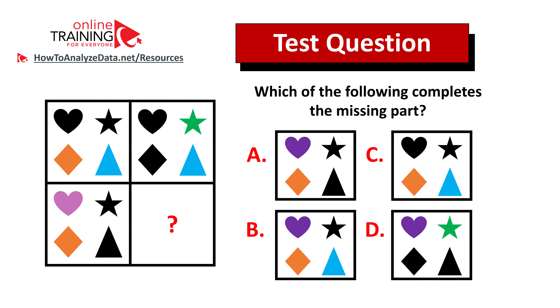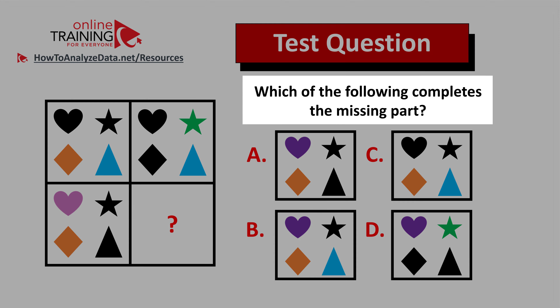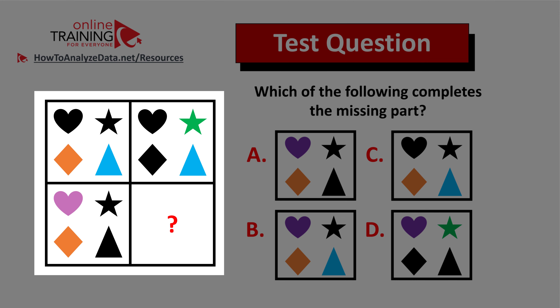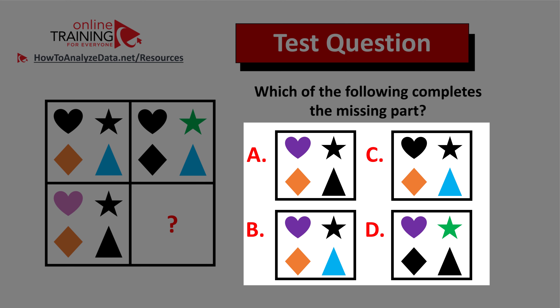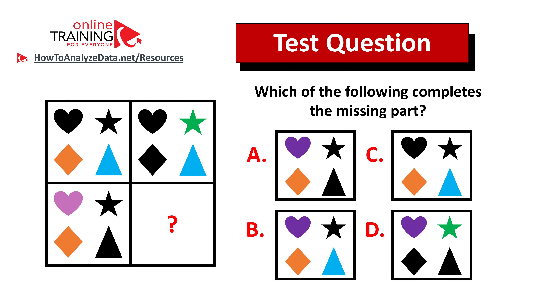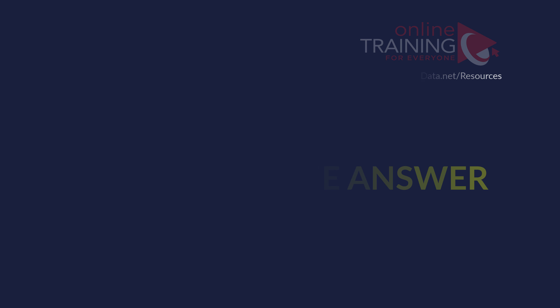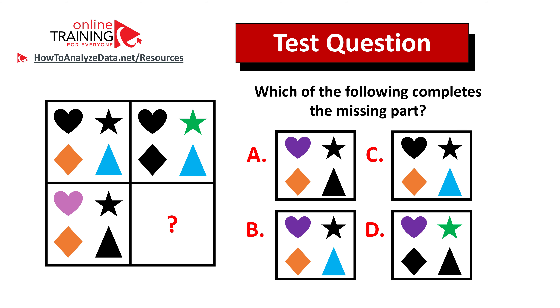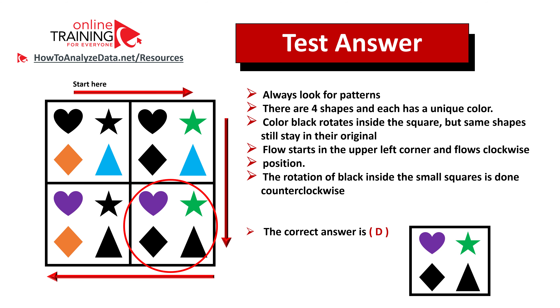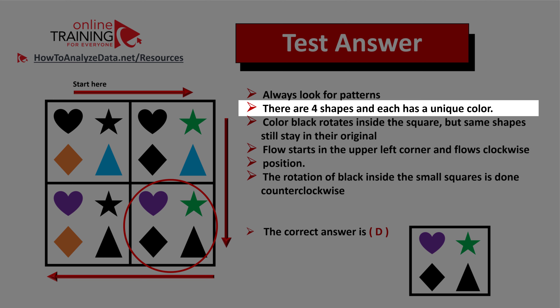Let me share with you a tricky question which tests your reasoning, analytical, as well as visualization skills. Which of the following completes the missing part? You're presented with a two-by-two box and one of the squares is missing. You have four different choices — A, B, C, and D. There are four shapes inside the square and each shape has a unique color. Shapes stay in place — the only thing that changes is the black color for the shape. What you can see is that the pattern of the black colors inside the squares rotates counterclockwise.